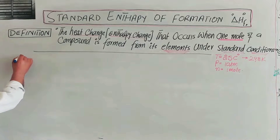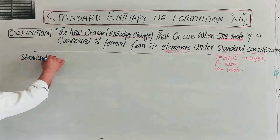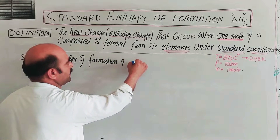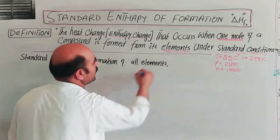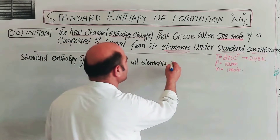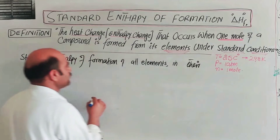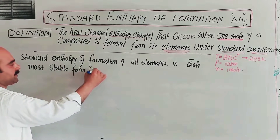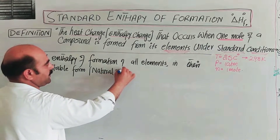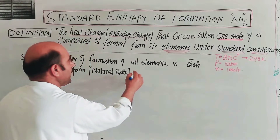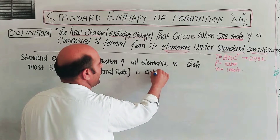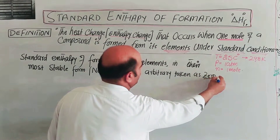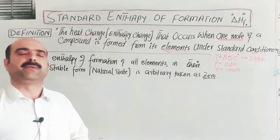The standard enthalpy of formation of all elements in their most stable form — their natural state, free state, or elemental state — is arbitrarily taken as zero. Because they already exist naturally, no formation reaction is needed, so their standard enthalpy of formation delta H degree F is zero by convention.